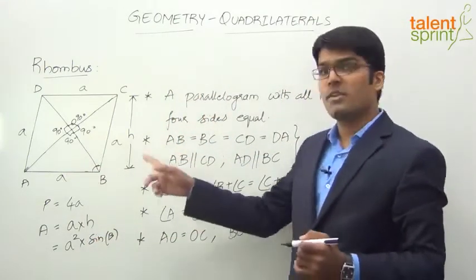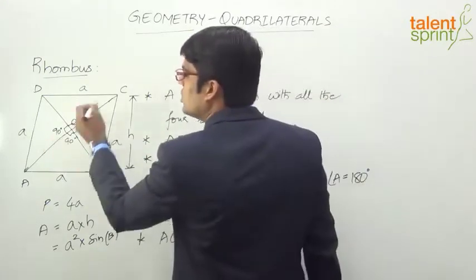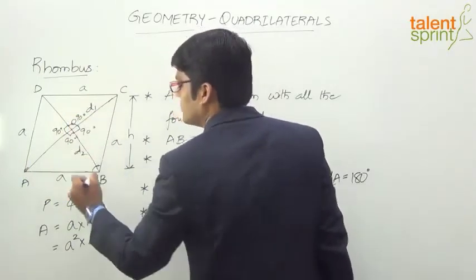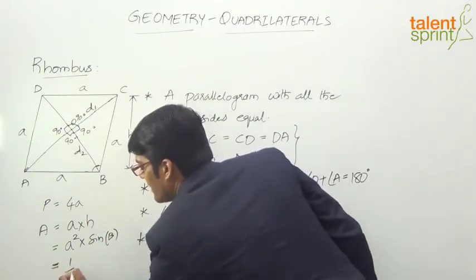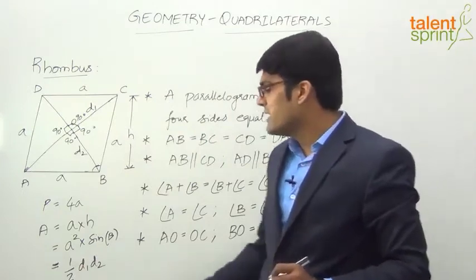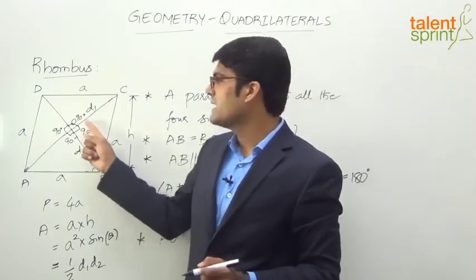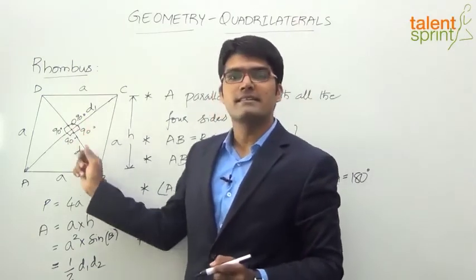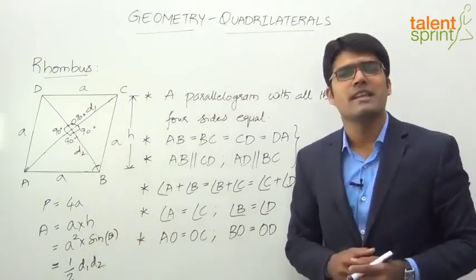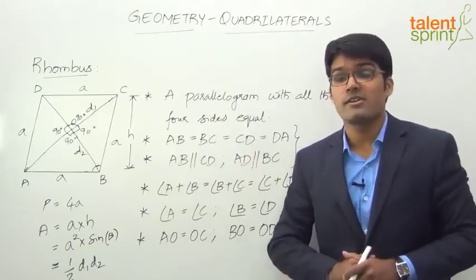A special formula for the area of a rhombus is half times D1 times D2, where D1 and D2 are the two diagonals. So area equals half into D1 into D2. This comes from the general formula: half times D1 times D2 times sine of the angle between the diagonals. Since the diagonals intersect at 90 degrees and sine 90 is 1, we are left with half D1 D2. So those are the different ways of measuring the area of a rhombus, concluding our discussion of the quadrilateral rhombus and its properties.